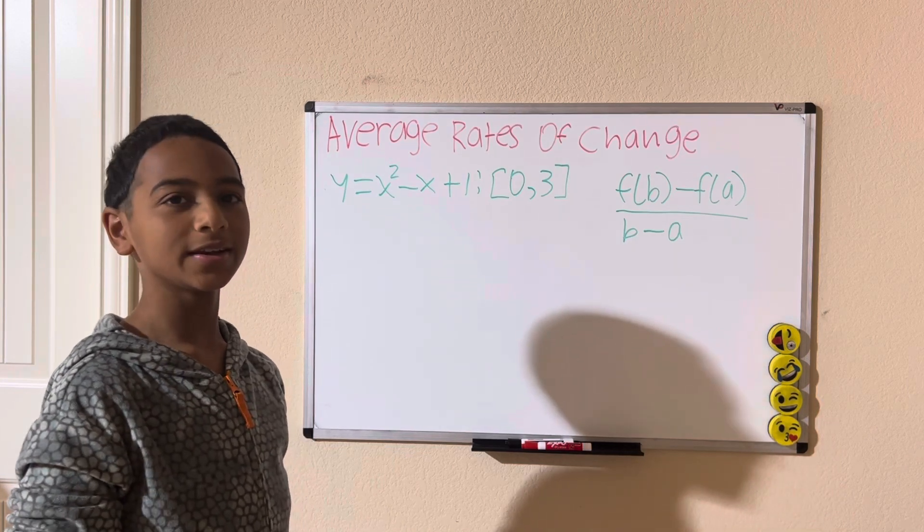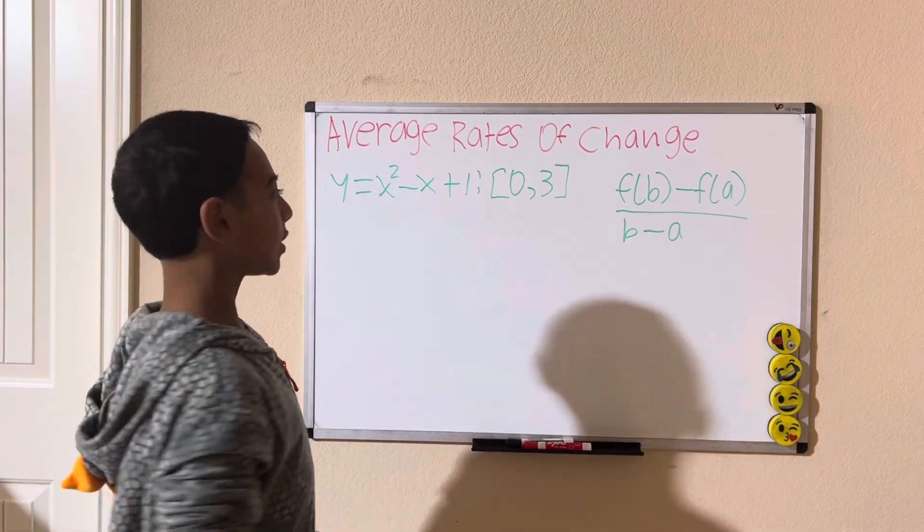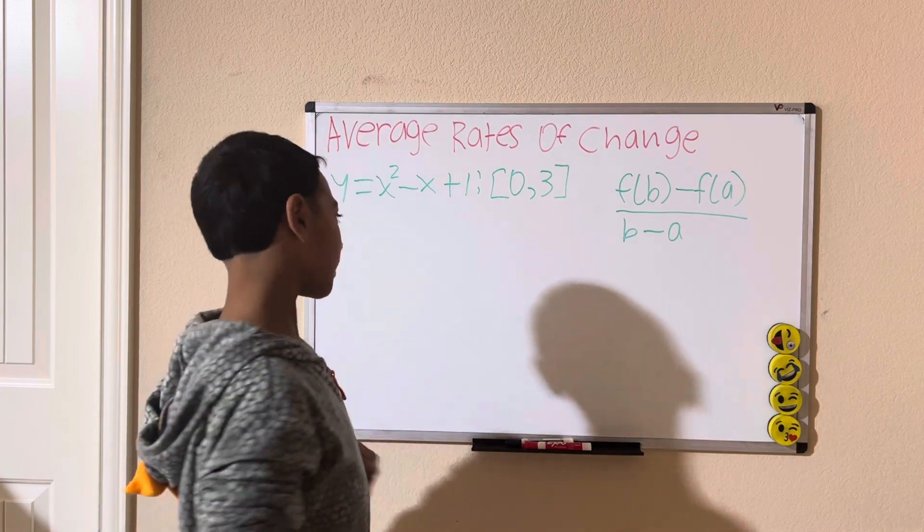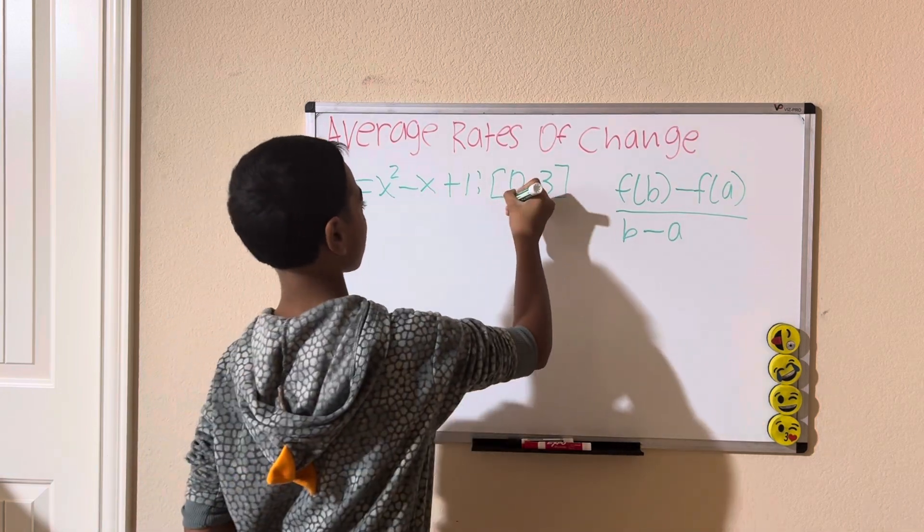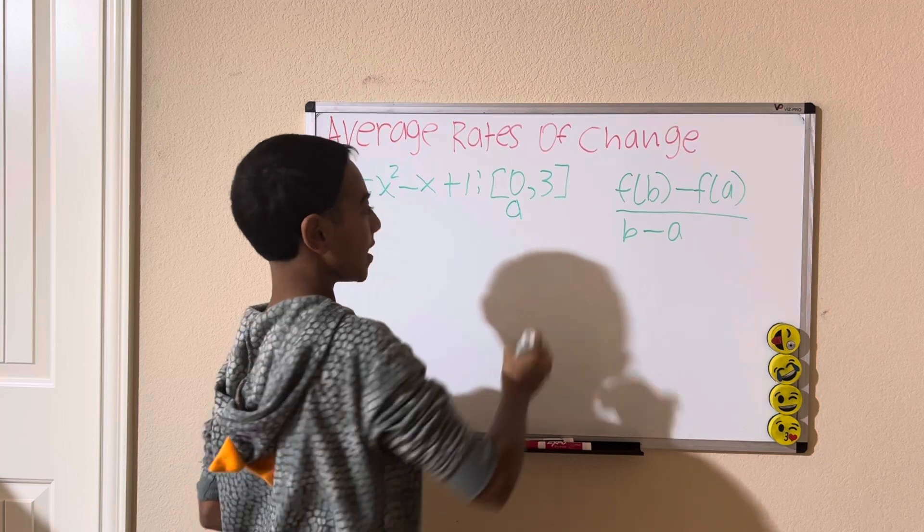How do we know what a and b are? We're given intervals. One of them is a, one is b. So, we start in order. So, 0 is a, and 3 is b.